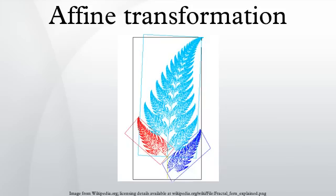Examples of affine transformations: affine transformations over the real numbers — functions f: R → R defined as f(x) = mx + c, with m and c constant — are commonplace affine transformations.